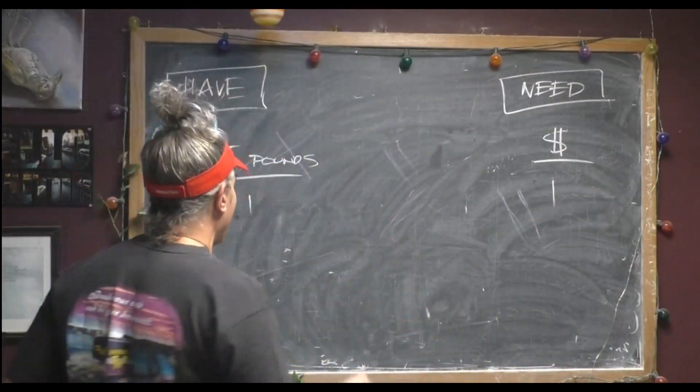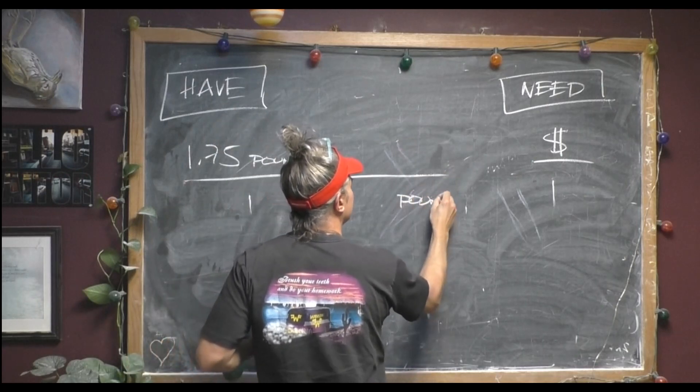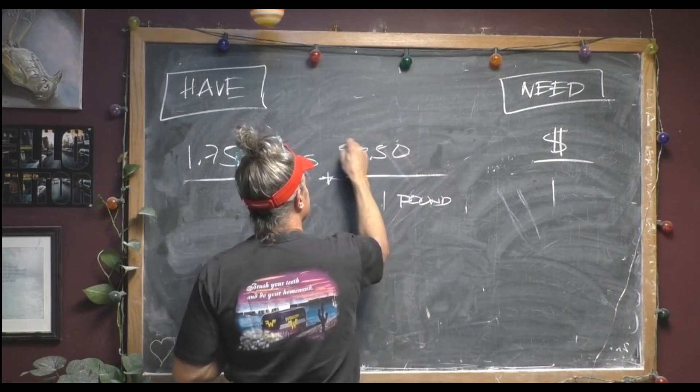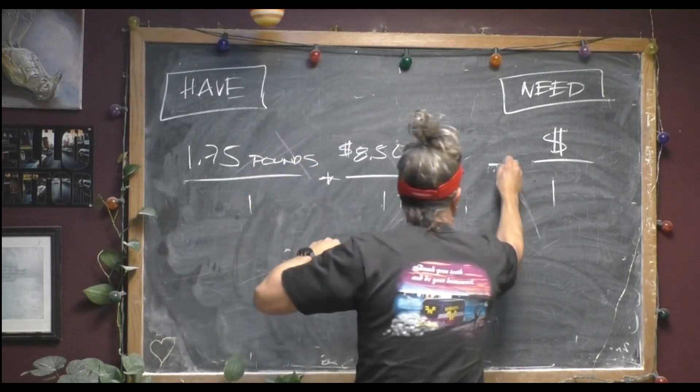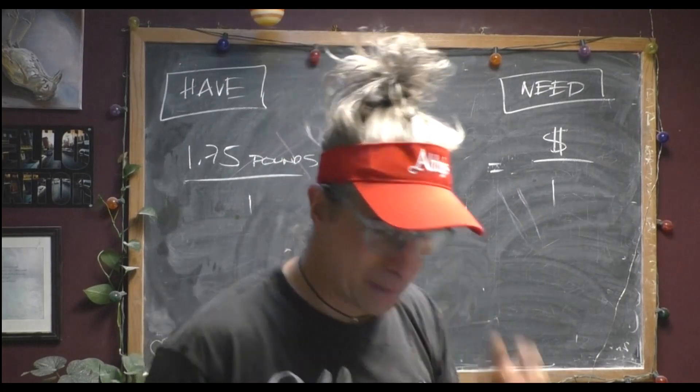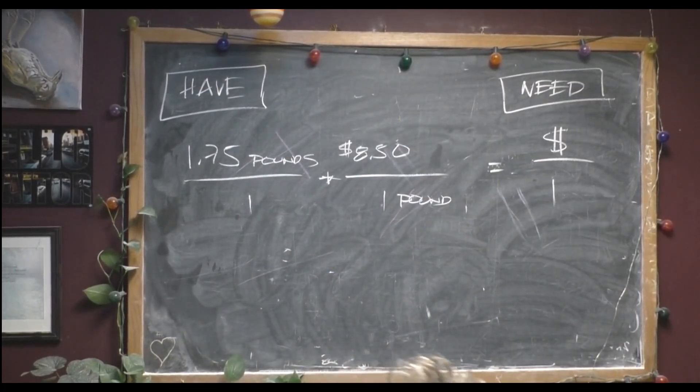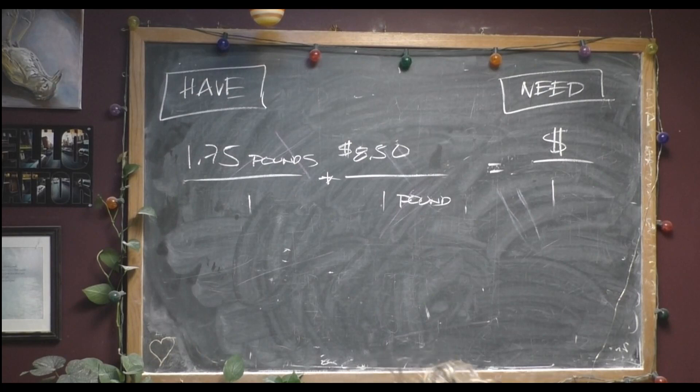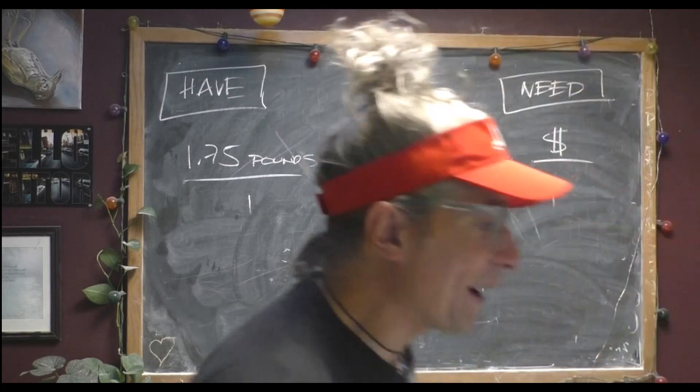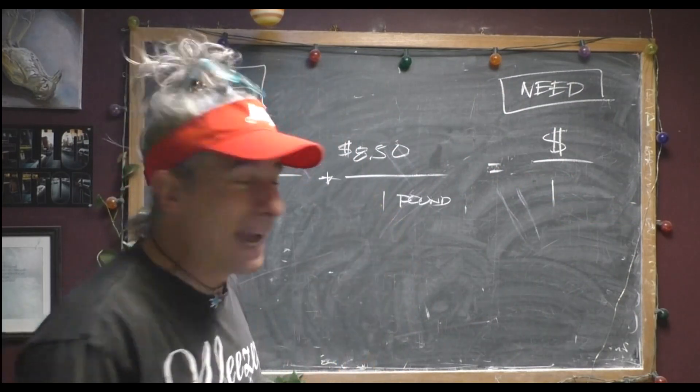So we know that pounds has to go away. So we're going to stick pounds down here. And it's $8.50 per pound. And that's going to give us our dollar amount. I should be able to do this in my head, but I don't think I can. I get 14.875, so we're going to round that up to $14.88.